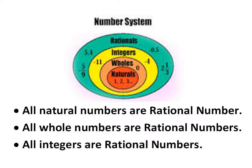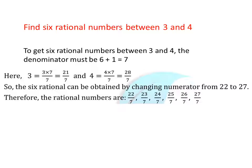As we know, there are many rational numbers between any two rational numbers. Here the question is: find six rational numbers between 3 and 4. To get six rational numbers between 3 and 4, the denominator must be six plus one, which equals seven. So we multiply both numerator and denominator by seven: 3 becomes 21/7, and 4 becomes 28/7.